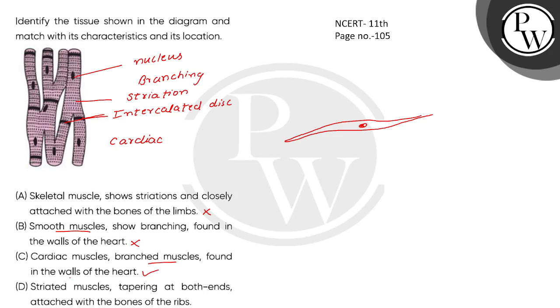Wall of heart. Striated muscle tapering at both ends - so it is not tapered. If it is tapering then it is like this, and you can see smooth muscles like this.